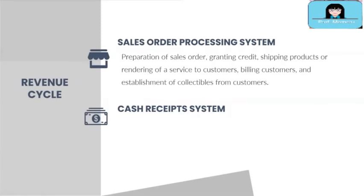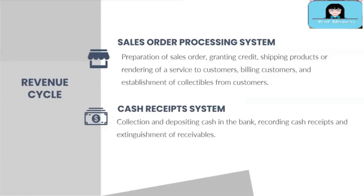Next, the revenue cycle — the last subsystem of TPS. The sales order processing system is the first subsystem of the revenue cycle. It involves the order taking process, credit approval, shipping of products or rendering of services, the billing process, and recording of accounts receivables. The cash receipts system is the second subsystem and involves the collection of payments from customers, depositing collections in the bank, recording cash receipts in the accounting records, and clearing receivables as paid.